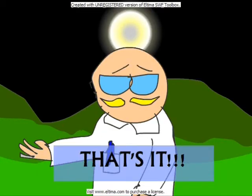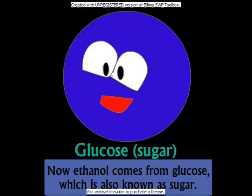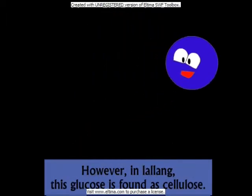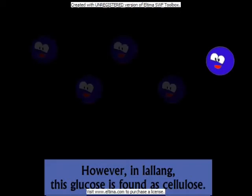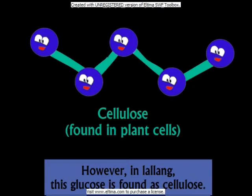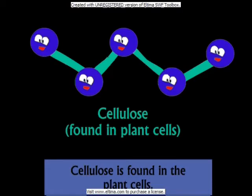That's it! Now, ethanol comes from glucose, which is also known as sugar. However, in lala, this glucose is found in cellulose. Cellulose is found in the plant cells.